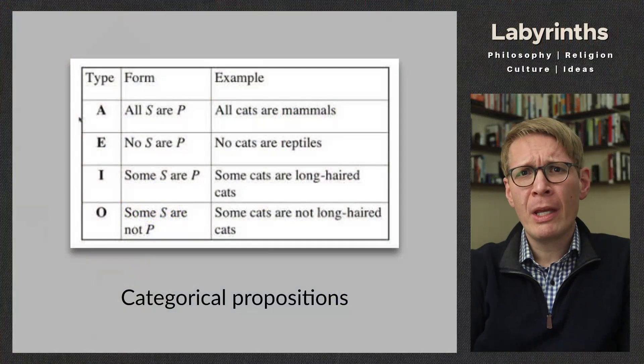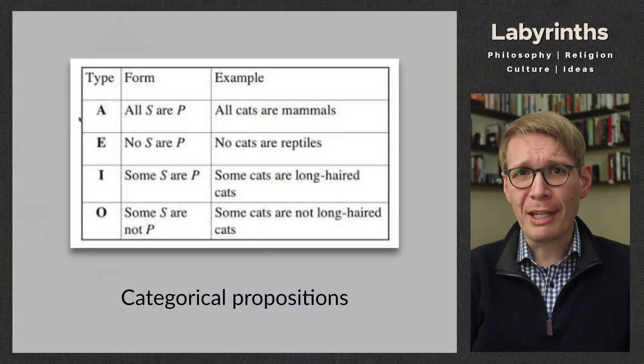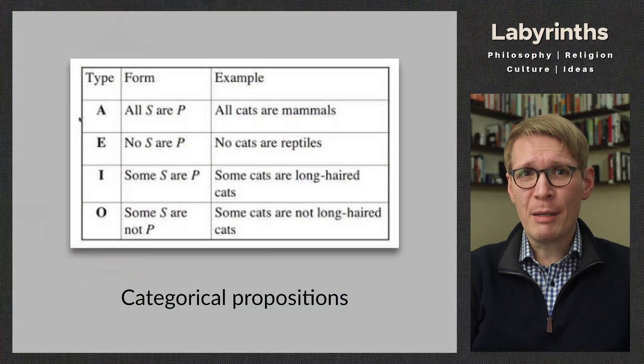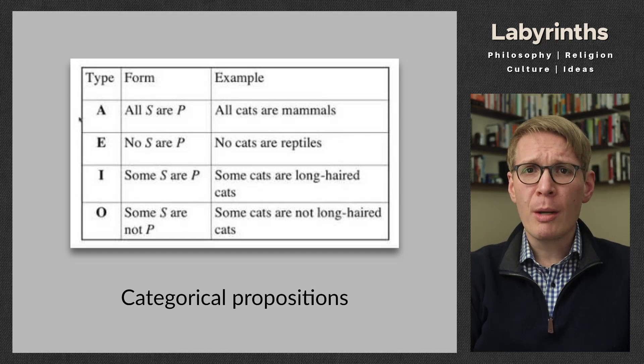Hi everybody. This is lecture 10 in our series on the Trivium, that is the first three of the classical liberal arts: grammar, rhetoric, and logic. Today we continue our discussion of the logic of propositions, looking at categorical propositions. This will be the main kind of proposition that we deal with in this series. Our title slide here presents an image of the four main types of categorical propositions.